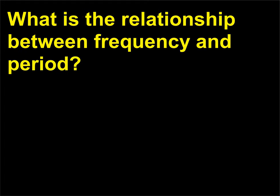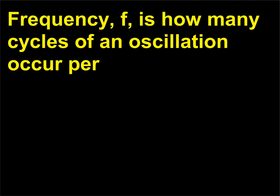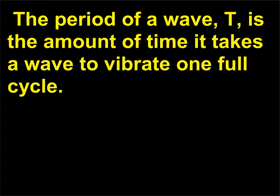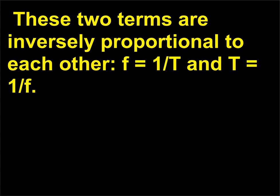What is the relationship between frequency and period? Frequency, f, is how many cycles of an oscillation occur per second and is measured in cycles per second or hertz. The period of a wave, T, is the amount of time it takes a wave to vibrate one full cycle. These two terms are inversely proportional to each other: f equals 1 slash T and T equals 1 slash f.